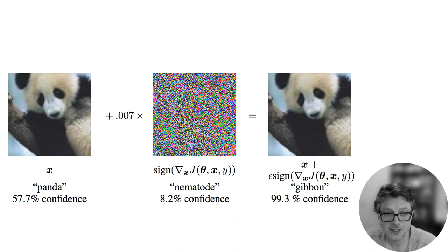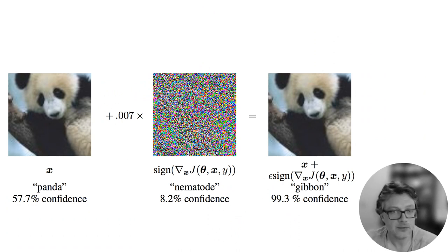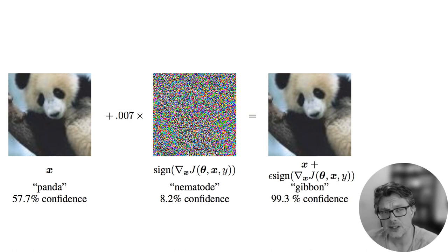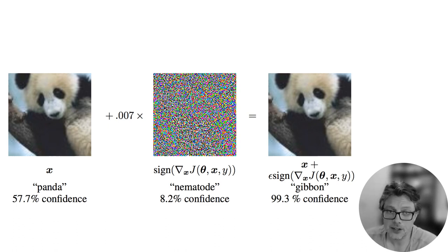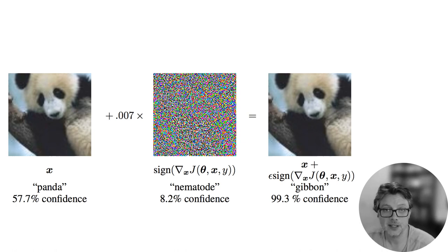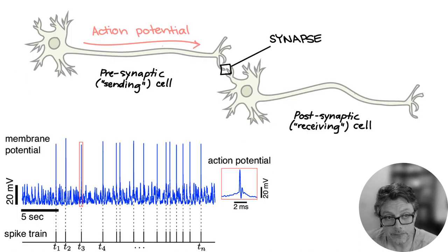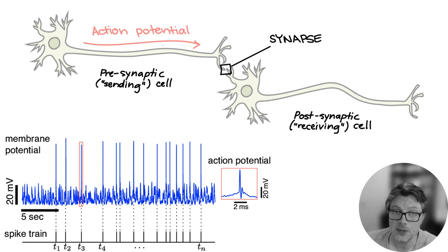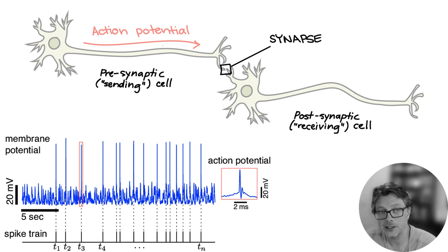After all, the human brain can still easily solve some tasks that we can't yet easily solve with machine learning. So how does it do that? Well, honestly we don't know yet, but we do know some pretty crazy and fascinating stuff about the mechanisms the brain uses — like the incredibly energy efficient way that brain cells signal to each other, which is neither fully digital nor fully analog.